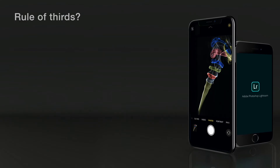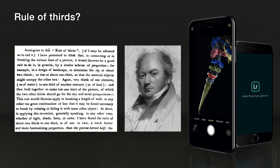The rule of thirds — what's this all about? This was first recorded back in 1797 by John Thomas Smith. Although this was based on paintings and the balance of dark and light, he developed this further with subjects in the paintings.